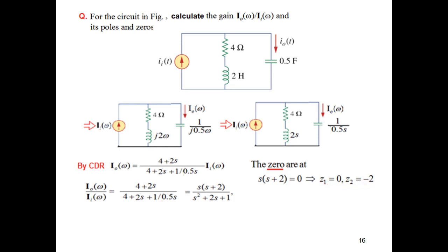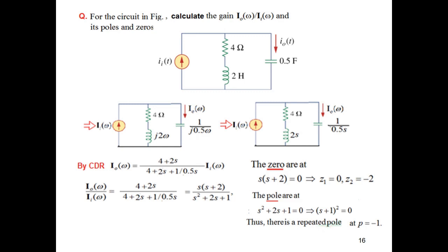For the poles, the denominator can be written as (s + 1)² = 0. Since it is squared, we have two roots at the same location — this is called a repeated pole. Setting s + 1 = 0 gives p = −1, and because of the square, both poles are at p = −1.